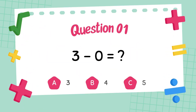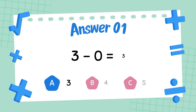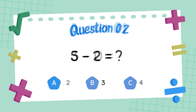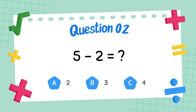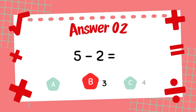What is 3 minus 0? The answer is 3. What is 5 minus 2? The answer is 3.